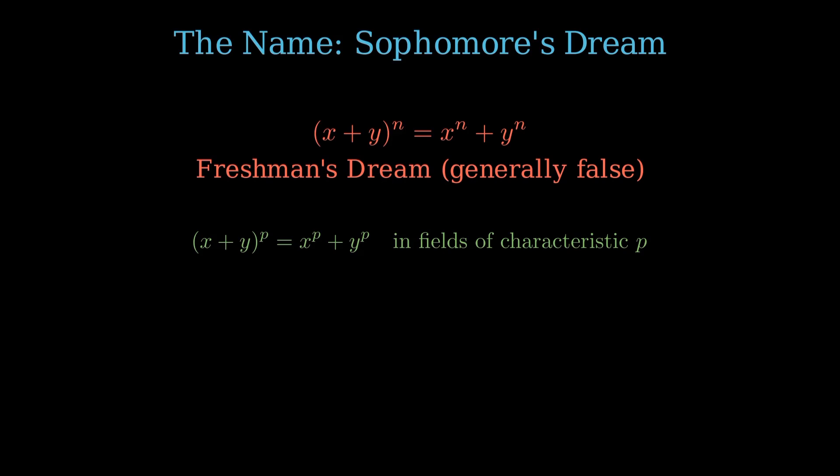like in fields of prime characteristic p, where x plus y to the p equals x to the p plus y to the p. The sophomore's dream, named for our integral, likely emerged much later than Bernoulli's time, but it beautifully captures the surprising nature of the result. Bernoulli's original methods were quite advanced for his time. Today, we'll explore a more modern proof.